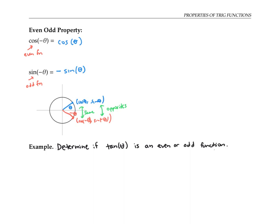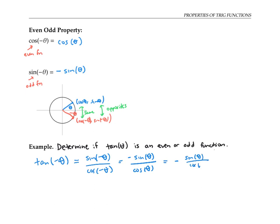Let's figure out if tangent of theta is an even or odd function. We know that tan of negative theta — tangent by definition is sine over cosine. Sine of negative theta is the negative of sine of theta, whereas cosine of negative theta is cosine of theta. Therefore, we get negative sine theta over cosine theta, which is negative tan of theta. Since tan of negative theta is the negative of tan of theta, tangent is an odd function.